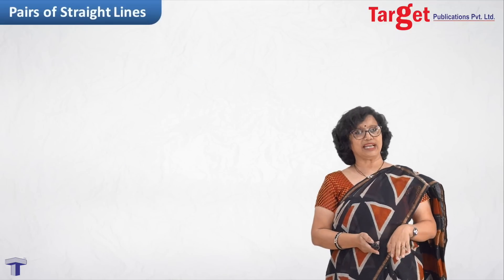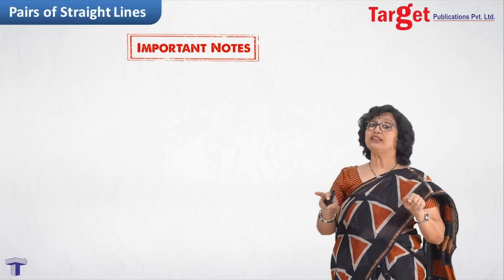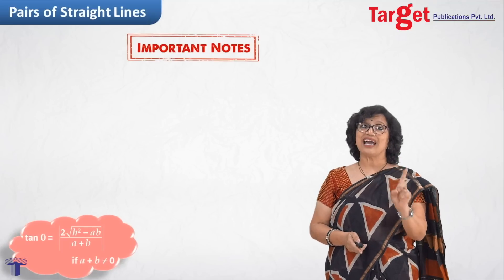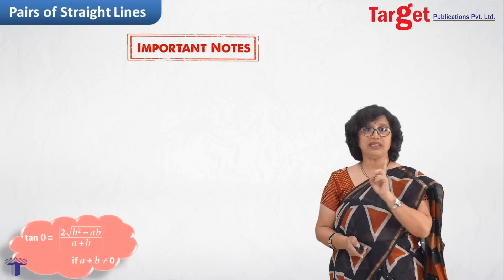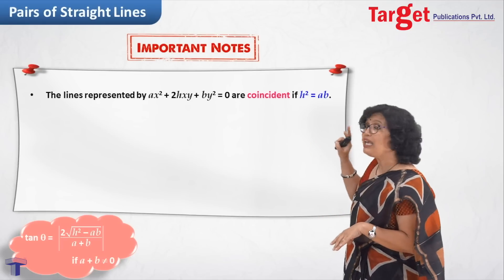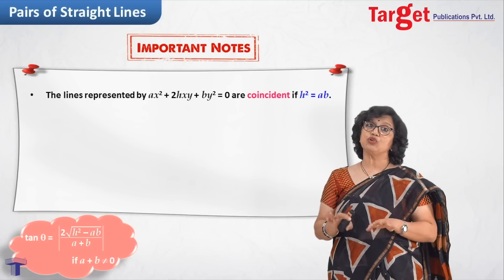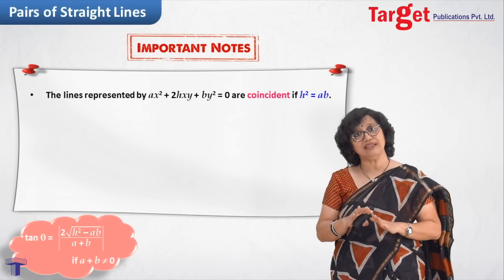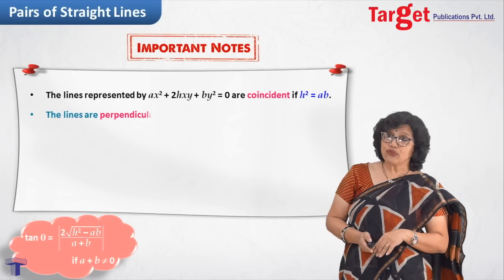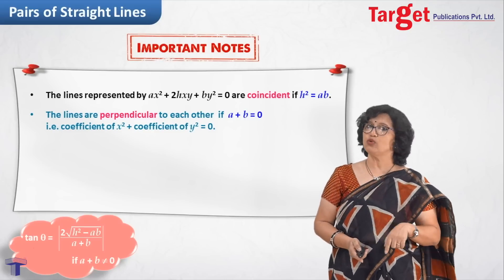Now let us move to important notes. Once you read the formula tan θ = 2√(h²-ab) / (a+b), several conclusions come to mind. If h² = ab, then tan θ = 0, meaning the angle between the lines is 0° and hence the lines would be coincident. If lines are perpendicular, as already mentioned, a+b must equal 0.